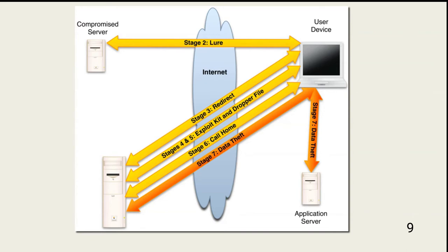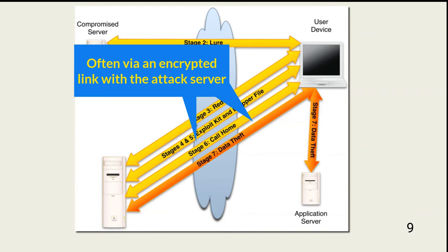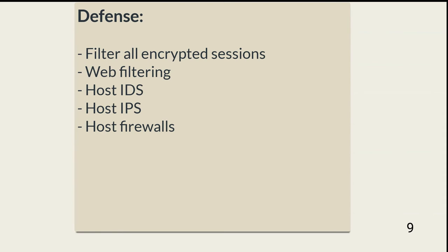Once the exploit kit is installed, it calls home to establish the command and control, or C2, link in the chain. This is how the threat actor provides instructions to the malware and receives back data. C2 is often encrypted to hide the threat's activities, which is why we try to block all direct encrypted links between internal and external devices. Blocking C2 via web filtering and ensuring the filtering of all encrypted sessions with the outside world is needed, starting with implementing host-based intrusion detection and firewall solutions.